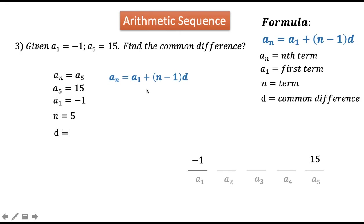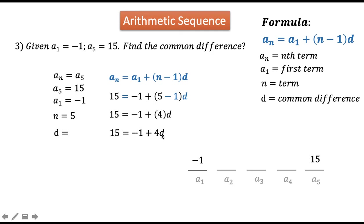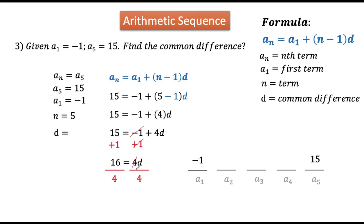Step 2: write the formula and substitute the given. So a sub n is 15, a sub 1 is negative 1, n is 5, and we solve for d. Solving algebraically: 5 minus 1 is 4, so we have 4 times d, which is 4d. To isolate d, add positive 1 to both sides — 15 plus 1 is 16, giving 4d equals 16. Dividing both sides by 4, d equals 4. Therefore, the common difference is 4.